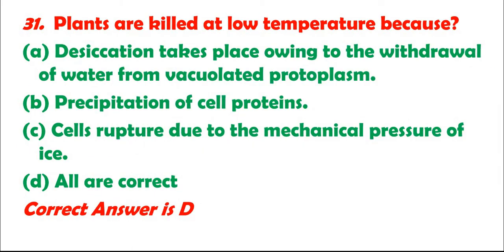Question 31: Plants are killed at low temperature because: A. Desiccation takes place owing to the withdrawal of water from vacuolated protoplasm. B. Precipitation of cell proteins. C. Cells rupture due to the mechanical pressure of ice. D. All are correct. Correct answer is D.